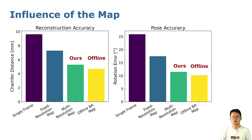Last but not least, we show that the fruit completion and pose estimation performance using the proposed multi-resolution map is much better than using the single frame measurement or the fixed resolution map. The performance is only slightly worse than the boundary-adjusted map that can only be built offline.